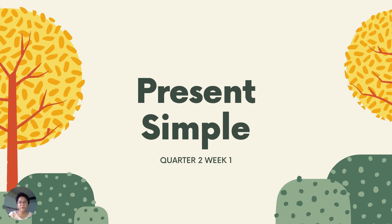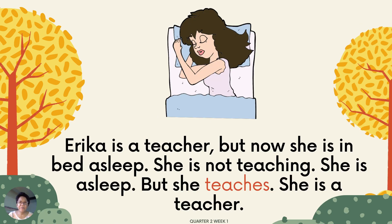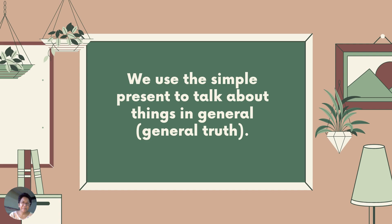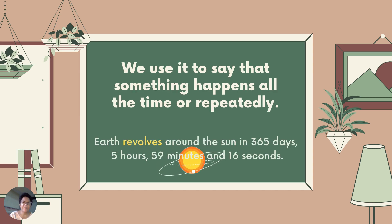Present simple for quarter two, week one. Take a look at this illustration — what is the lady doing? Her name is Erica and she is a teacher, but right now she's in bed asleep. She's not teaching; she is asleep. But she teaches — she is a teacher. We use the simple present to talk about things in general or the general truth.